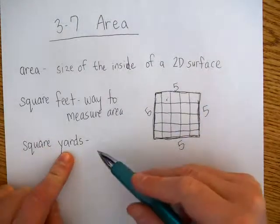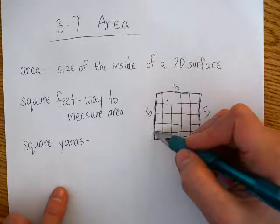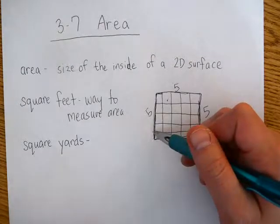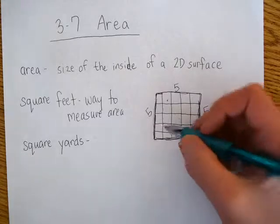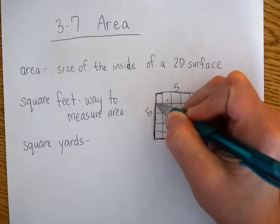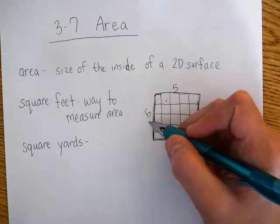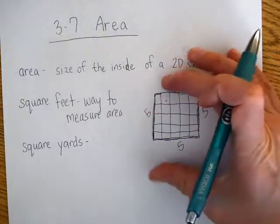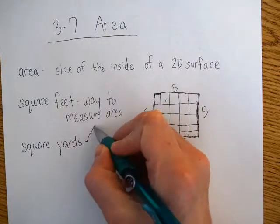Square yards is also a way to measure area. Instead of feet, I could say each of these is a yard. And we need to remember that a yard is 3 feet. So if I say each of these is a yard, that means each of these is 3 feet long. So this will equal 5 yards, or 15 feet. So it means this area is actually a lot bigger.